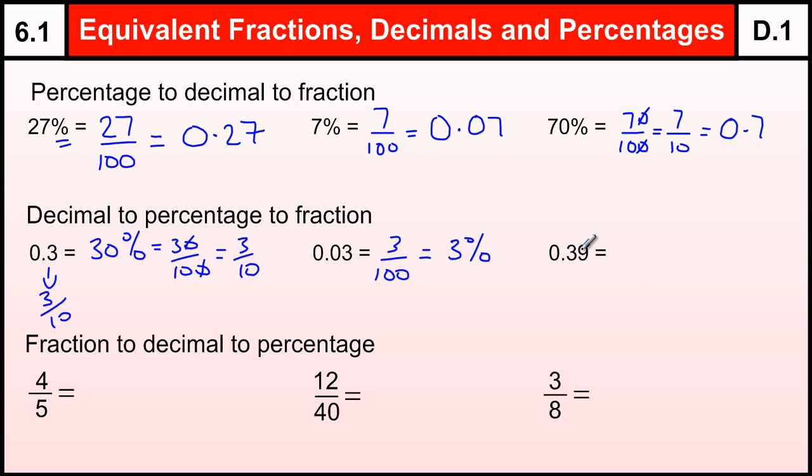0.39. Times them by 100, 39%. And as a fraction, 39 over 100. And that can't be cancelled down.